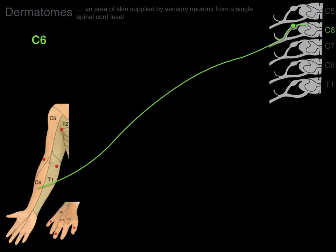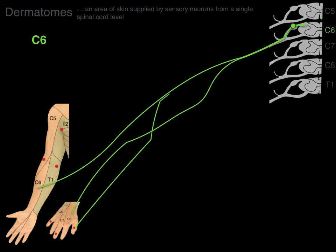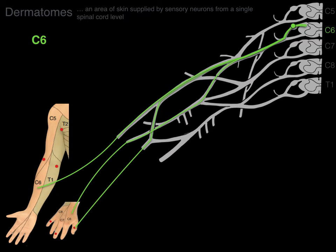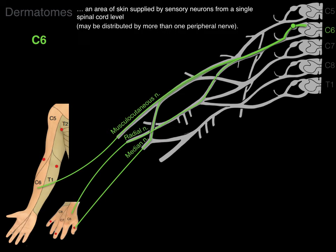Let's look at C6. There we have sensory neurons from the C6 dermatome. Laying it on top of where the brachial plexus is — the musculocutaneous, the radial, and median nerves are all roadways that transmit sensory neurons to the C6 spinal cord level. So a dermatome is an area of skin supplied by sensory neurons from a single spinal cord level, and they may be distributed by more than one peripheral nerve.